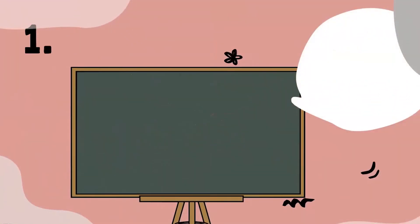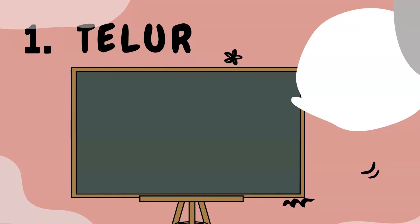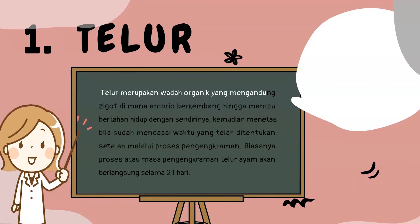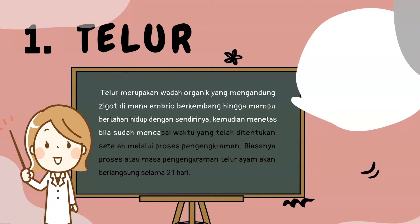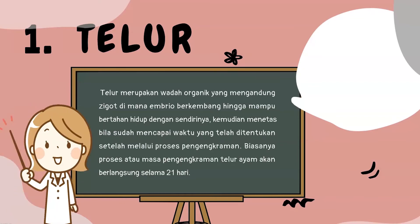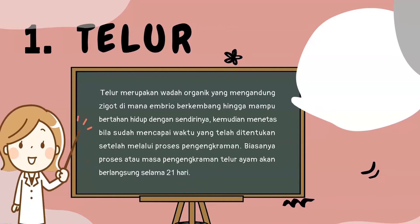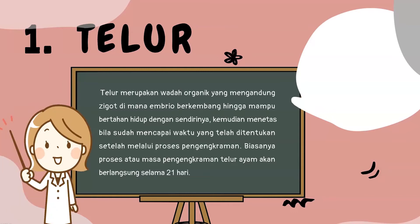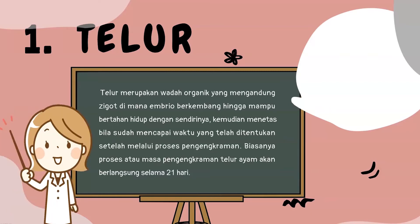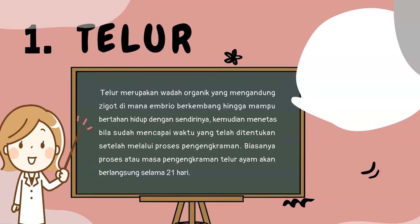Bentuk awal dari ayam adalah telur. Telur merupakan wadah organik yang mengandung embrio, di mana embrio berkembang hingga mampu bertahan hidup dengan sendirinya. Kemudian mereka akan menetas apabila sudah mencapai waktu yang ditentukan setelah melewati proses pengeraman. Biasanya masa pengeraman telur ayam berlangsung selama 21 hari.